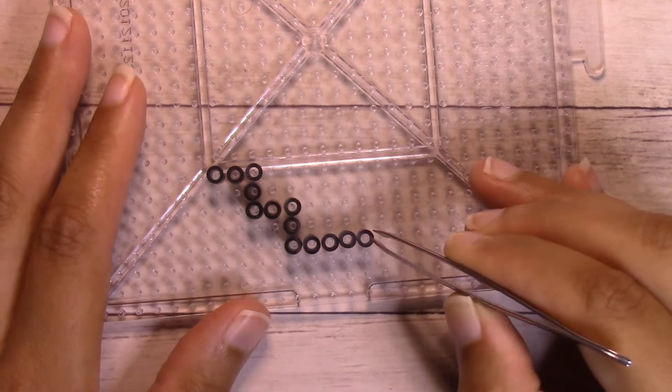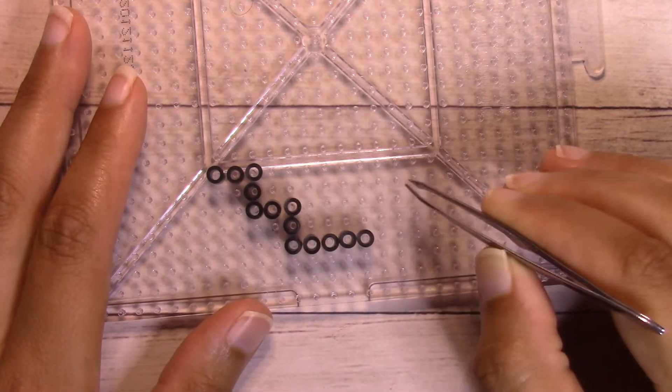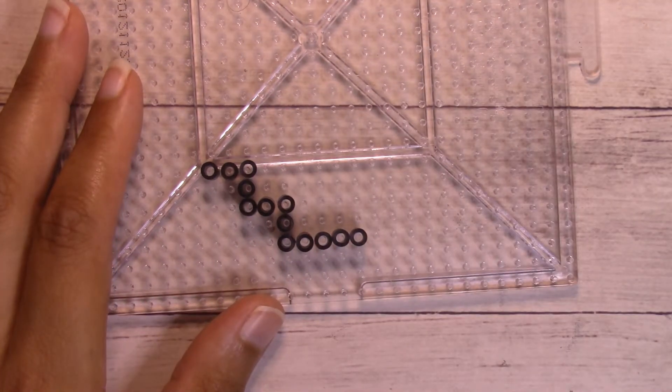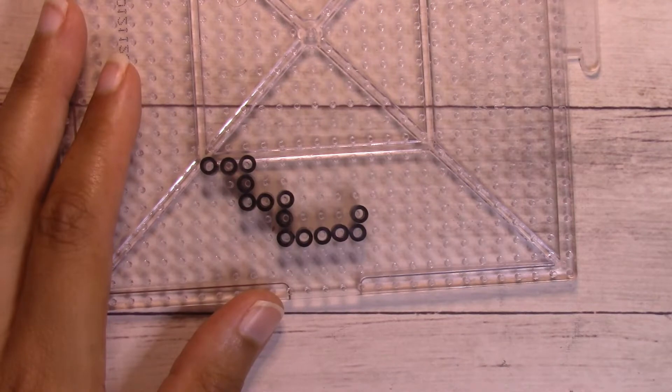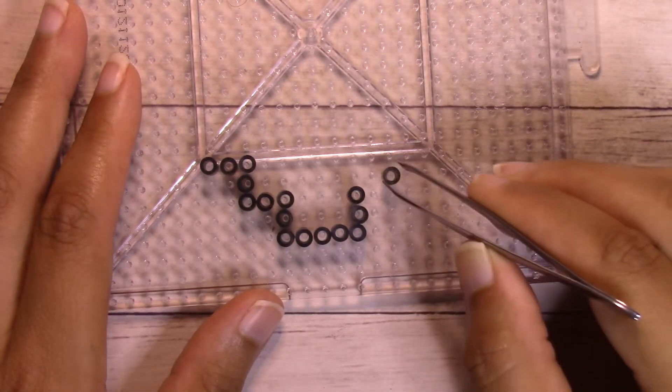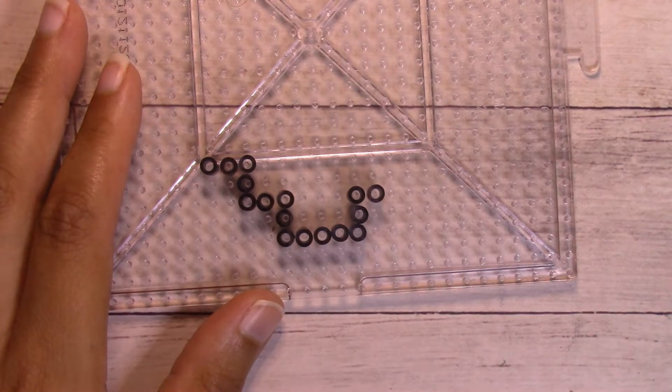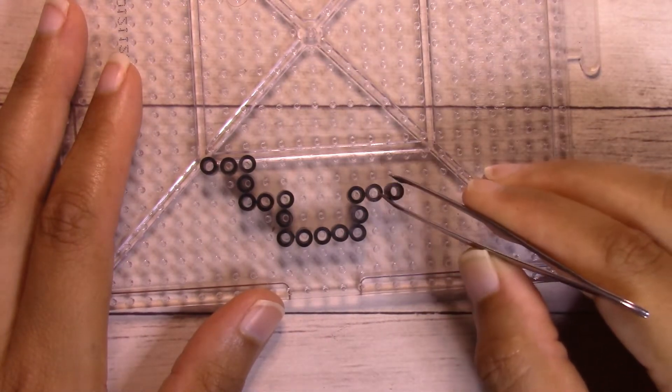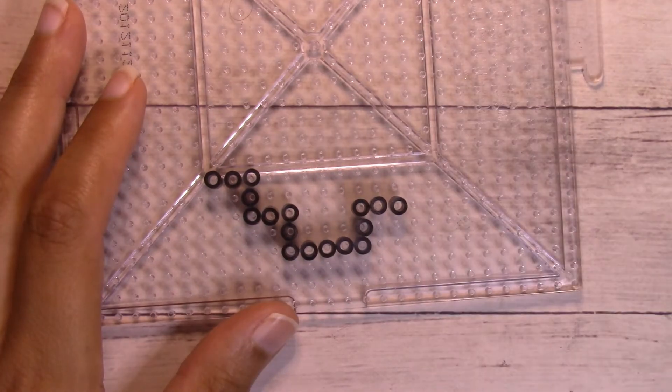Then I'll repeat that same process on the right side. I'm going to put two above that so there are three, then work two to the right so there are three.